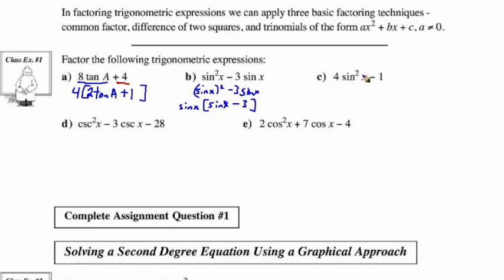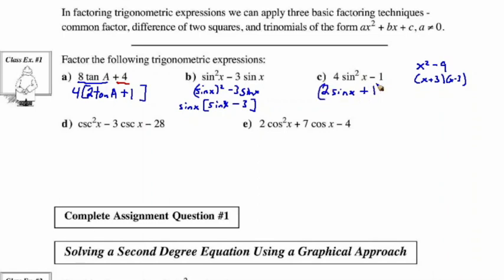What about 4 sine squared x minus 1? This is a difference of squares. Just as x squared minus 9 factors into x plus 3 times x minus 3, we can do the same here. Taking the square root of 4 sine squared x gives 2 sine x, and the square root of 1 gives 1. So we get 2 sine x plus 1 times 2 sine x minus 1. Multiplying through confirms this gives 4 sine squared x minus 1.